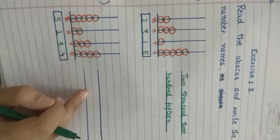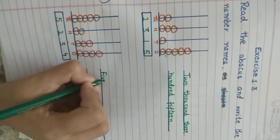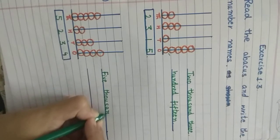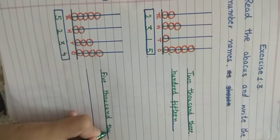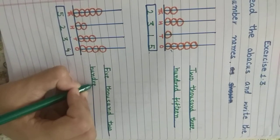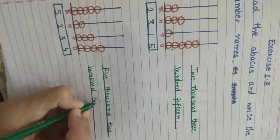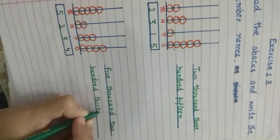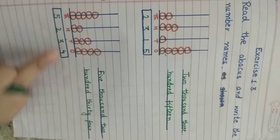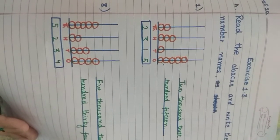Now let us write down the number name for 5,234. Five thousand — T-H-O-U-S-A-N-D — two hundred — H-U-N-D-R-E-D — thirty-four. So we write 5,234. That is question A, where we read the abacus, wrote the number and the number name.